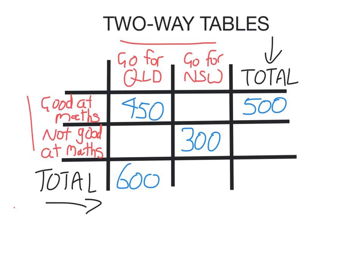If there were 500 people in total who were good at maths, and 450 went for Queensland, obviously 50 went for New South Wales. And if there were 450 here who go for Queensland, and there were 600 in total that go for Queensland, 450 of them were good at maths, so the number that goes here must be 150 — because this number plus this number has to equal that number. So the number in the next cell is 50 plus 300, which is 350.